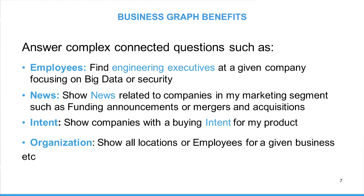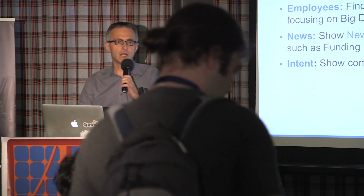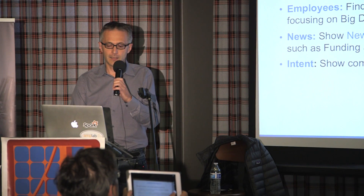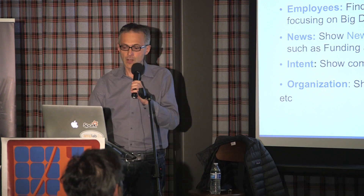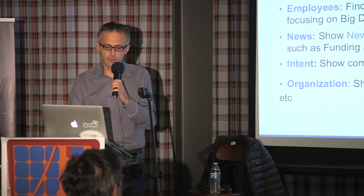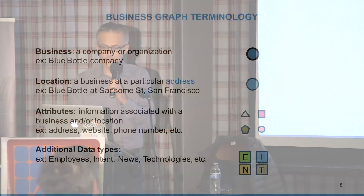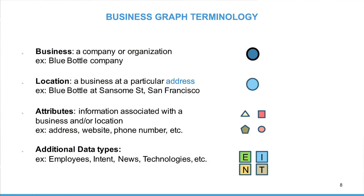The reason we're building a graph is to start answering complicated, complex questions. We don't simply want to find businesses — we want to find them by, for instance, looking at engineering executives at a given company focusing on big data and security, or looking for news related to companies in a specific marketing segment, such as companies with recent funding announcements or merger and acquisitions. Or show companies interested in a product based on buyer intent and browsing behavior on the internet. Or show the organization of a company — its locations, employees, and so forth.